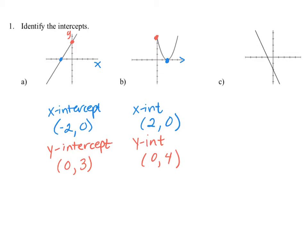In the last graph, we have a linear equation. The x-intercept occurs where the graph crosses through the x-axis, and that happens when x is equal to negative 1 and y is equal to 0. The y-intercept crosses through the vertical axis at negative 2, and that happens when x is equal to 0 and y is equal to negative 2.